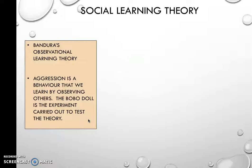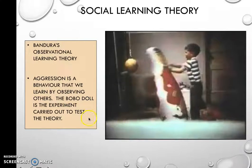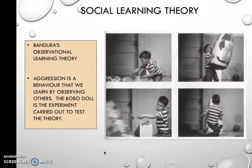Then there's social learning theory. Bandura has done a lot of work here and says we learn by observation. Aggression is a behaviour we learn by observing others. The famous Bobo doll experiment by Bandura had kids watch people beating up a giant doll and acting out physical harm. When placed in the same room afterwards, they exhibited the same types of aggression, and even extended it by using different weapons — showing that observing aggression can lead to becoming more aggressive.